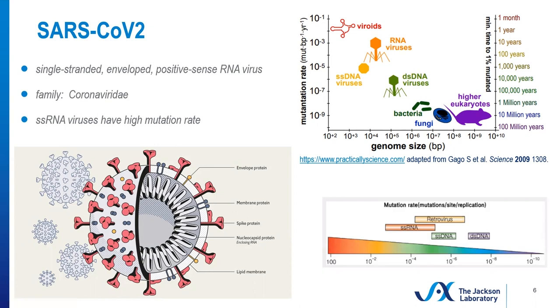Even among other RNA viruses such as the retroviruses, which include HIV, the single-stranded RNA viruses have an extremely high mutation rate, which helps explain the rate of variant emergence in COVID-19.